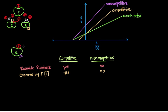The next key point is whether the inhibitor binds to the active site. For competitive inhibitors, the answer is yes and no — they can bind to the active site or an allosteric site, but they do have the ability to bind to the active site. For non-competitive inhibitors, the answer is no; they bind to an allosteric site.